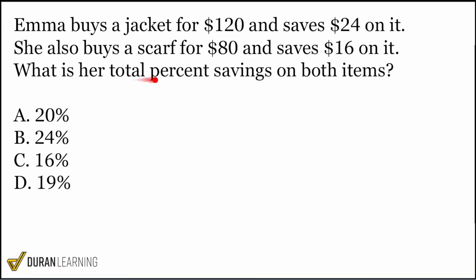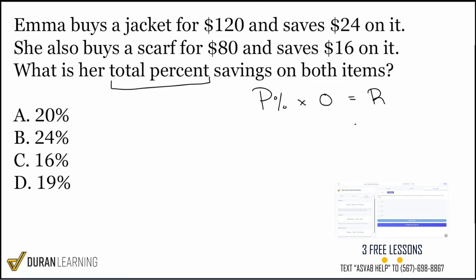So to find the total percent savings on both items, we need to understand that to get the total percent savings, we need to include the total percent discount and the total amount of the discount in our formula. Again, your formula is your percent multiplied by your original amount equals the result. And as always, your percent and result represent the same thing.